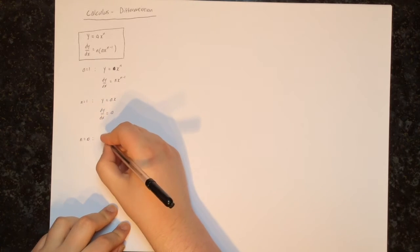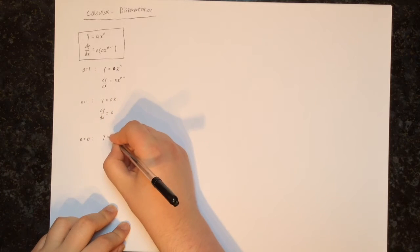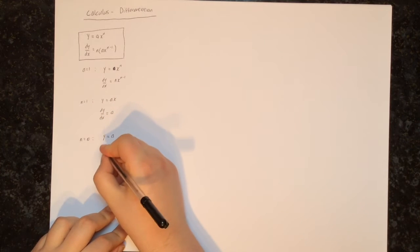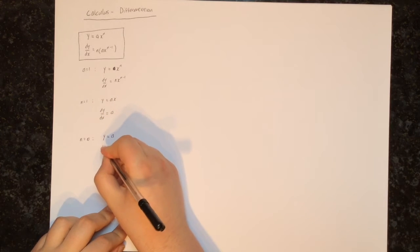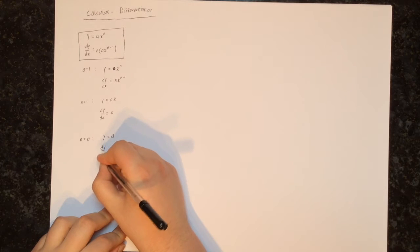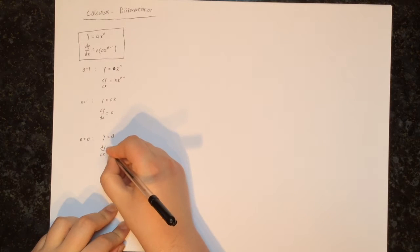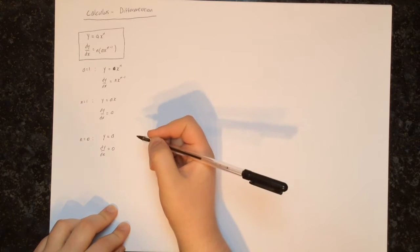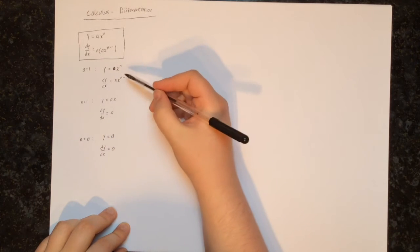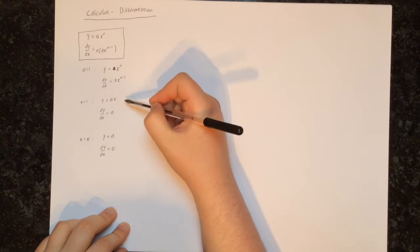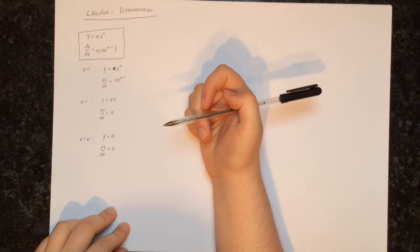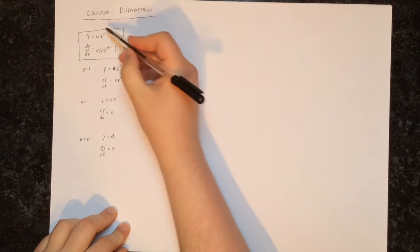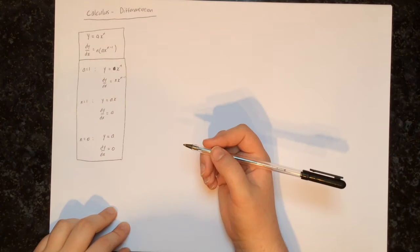And the last thing that we looked at is what happens when n is equal to 0. Well then we have y equals a, some constant, and dy/dx will be equal to 0. So these are the three things that we've covered in the previous videos, which are all summarized by this formula.